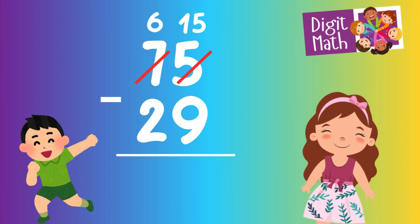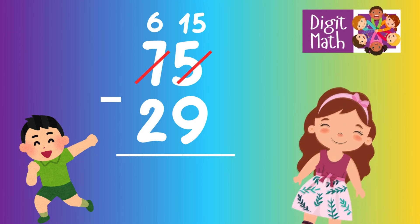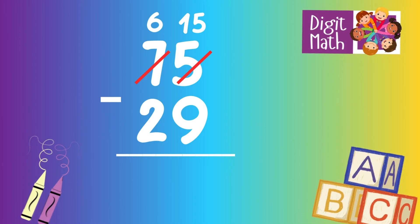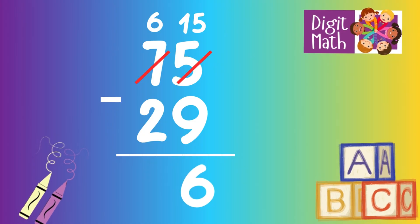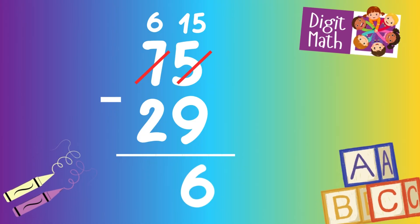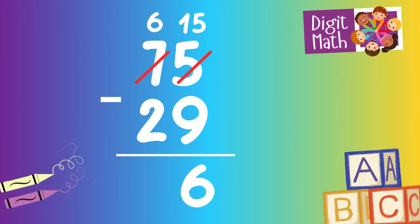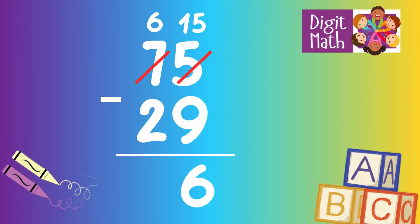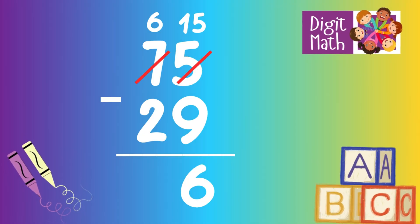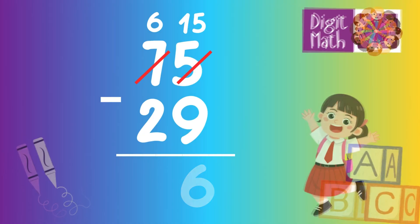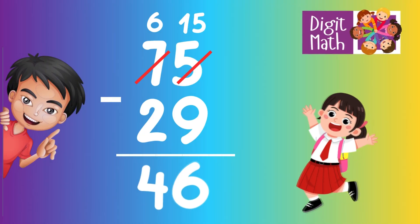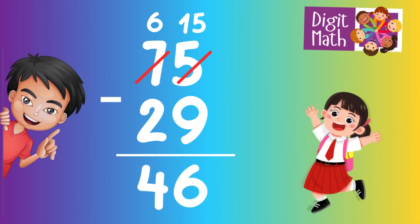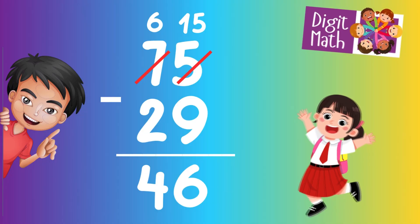Now we have 15 in the Units column. Subtract 9 from 15, which equals 6. In the Tens column, we now have 6. Subtract 2 from 6, which equals 4. So the final result is 75 minus 29 equals 46.